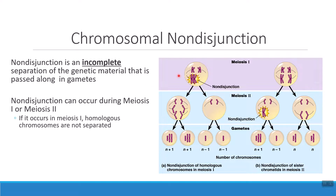When non-disjunction occurs in meiosis 1, we should be splitting up these homologous chromosomes from each other. But if non-disjunction occurs, both of these chromosomes may be pulled into the gametes on one side. At the same time, there's no chromosome here to continue through the process of division. So as we go through meiosis 2 and ultimately get down to the formation of gametes, notice that two of these gametes have three copies of the genetic information and two of these gametes only have one copy of that information.